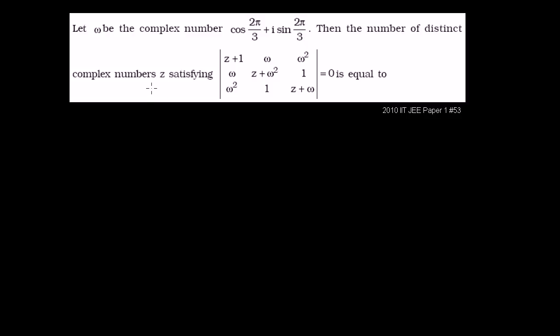Let omega be the complex number cosine of 2π/3 plus i sine of 2π/3. Then the number of distinct complex numbers z satisfying this determinant equaling 0. Let's evaluate this 3×3 determinant and see if we can solve for z, or figure out how many complex numbers z satisfy what's essentially an equation.